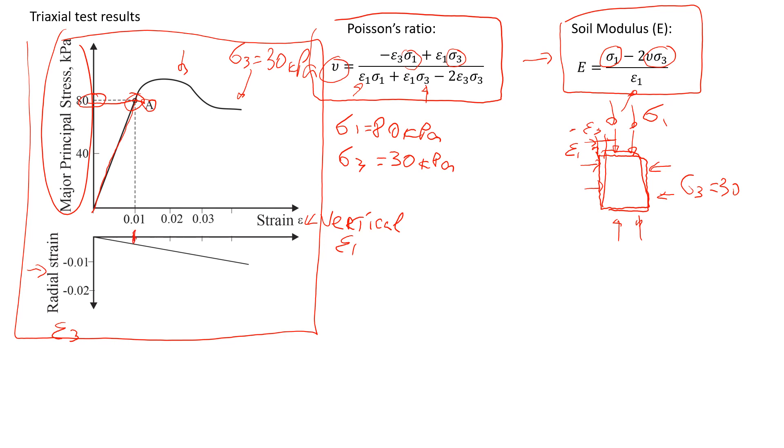We know that the axial strain, epsilon1, will be 0.01. Now we have to estimate what the radial strain will be. The radial strain will be negative 0.003. So that's my estimations.